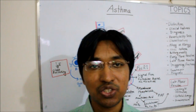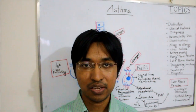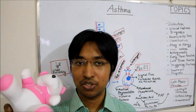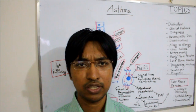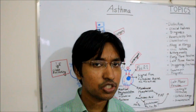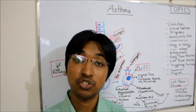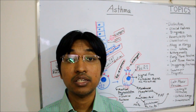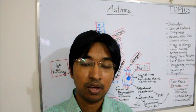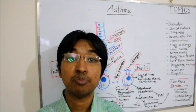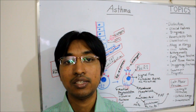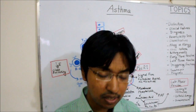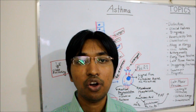Asthma is a chronic inflammatory disorder of the airway. It is one of the most common chronic disorders — it is estimated that about 300 million people worldwide are affected by this disease. The prevalence of asthma is increasing, and it is increasing more particularly in children.